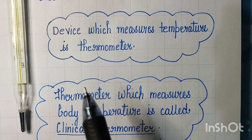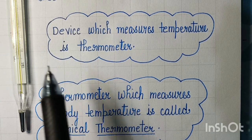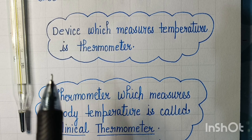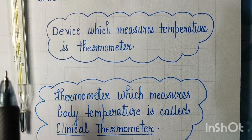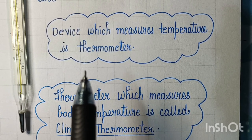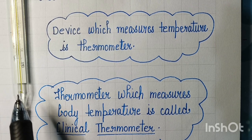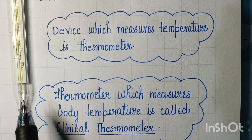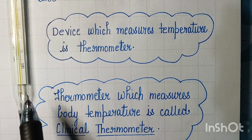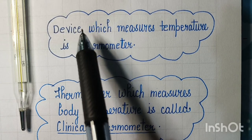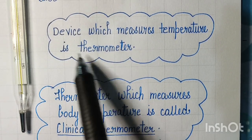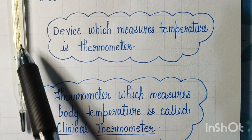Children, today we are going to understand what is a thermometer, what is the difference between a clinical thermometer and a laboratory thermometer, and why do thermometers have a kink, and which thermometer measures our body temperature. A device which measures temperature is called a thermometer.